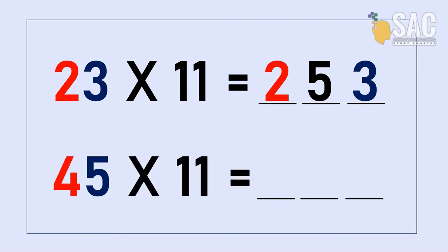How about 45 times by 11? First one is 4, last one is 5, then the middle one is 4 plus 5, which is 9, so it will be 495. Easy!